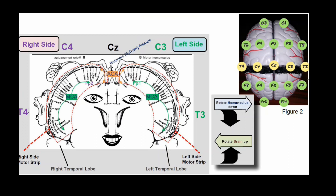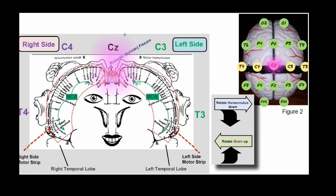If we superimpose electrodes over the homunculus, we can get an idea for what we would expect to see clinically when we see a paroxysm, slowing, or some type of LPD — something abnormal on the EEG. For example, if a patient has left central parasagittal LPDs, C3 is around this area, so we would expect maybe some hand twitching and also some facial twitching because C3 covers a relatively broad area of the homunculus. However, Cz right along the midline, which is near the anterior cerebral artery, is going to affect the lower extremities.